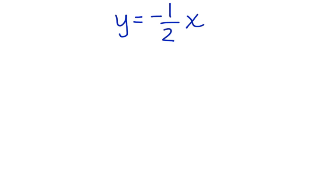What about if you had this equation y equals negative 1 half x? Well, the slope is already here. But what about the y-intercept? There isn't anything over here. That means that our y-intercept is 0.